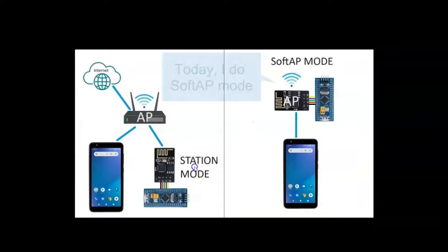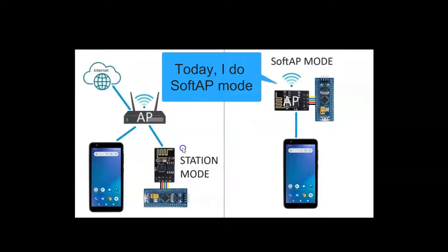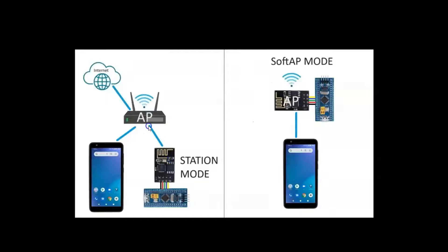There are two different modes: one is station mode, the other is access point mode. In station mode there should be an access point and it will connect to that — all devices can connect and it can also connect to the internet. Today we're going to use the other one, where this will work as a soft access point and devices can connect to it.